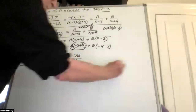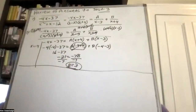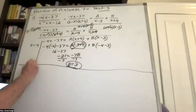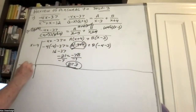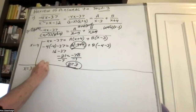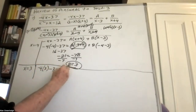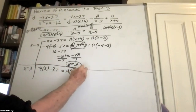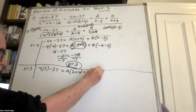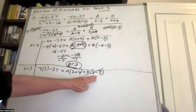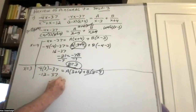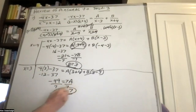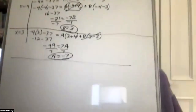Divide by negative 7 and b equals 3. Then solve for a by letting x equal 3. Negative 4 times 3 minus 37 equals A times 3 plus 4 plus B times 3 minus 3. The B's drop out because that becomes 0. Negative 12 minus 37 is negative 49 equals 7a. Divide by 7 and a equals negative 7. People did this in a variety of ways.